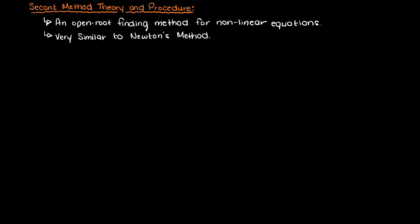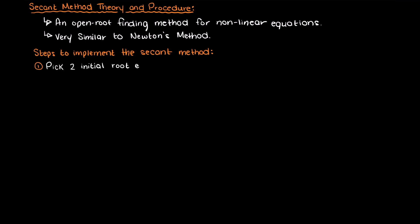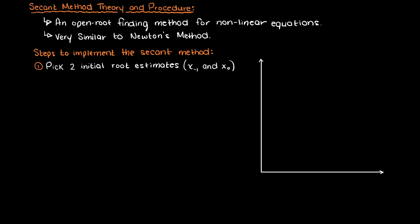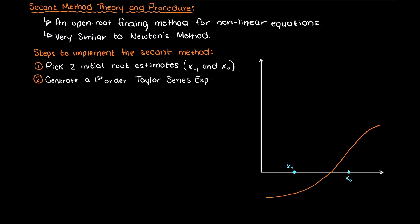Alright, so let's now go through the steps of how we implement the secant method and use it to find the roots of a non-linear equation. Step 1: we must first pick two initial x value estimates around where we think the root will lie. Moving into Step 2, we need to generate a first order Taylor series expansion to approximate a function for our secant line.